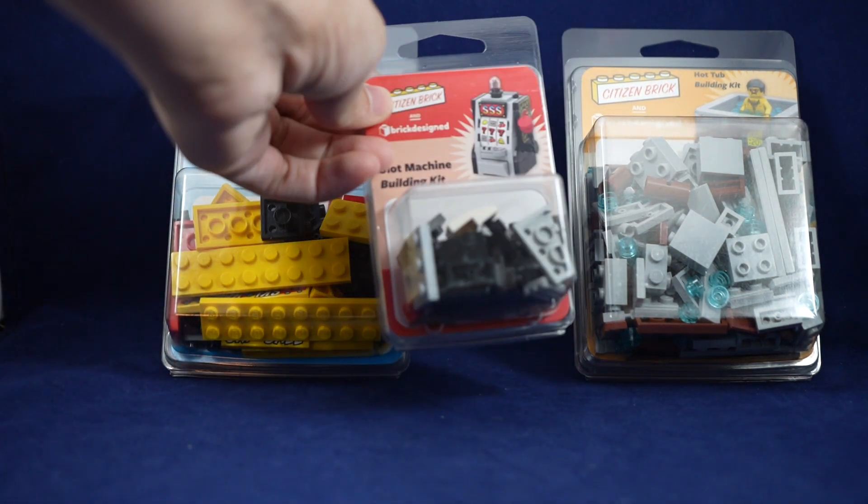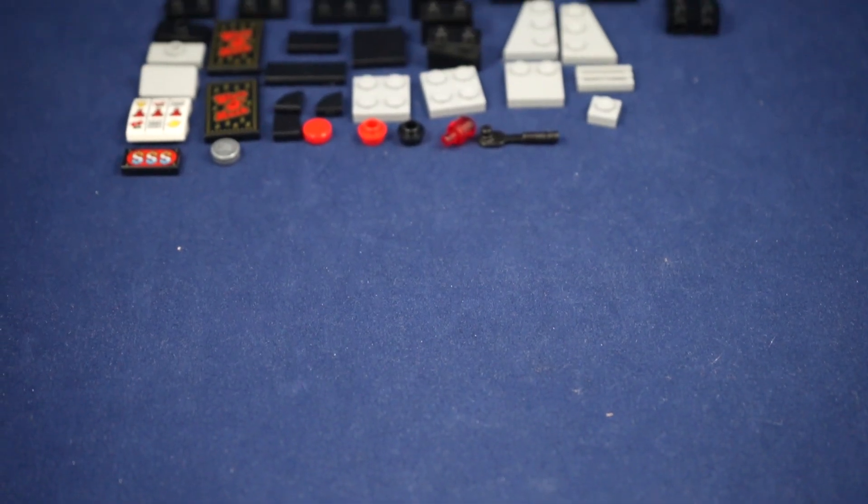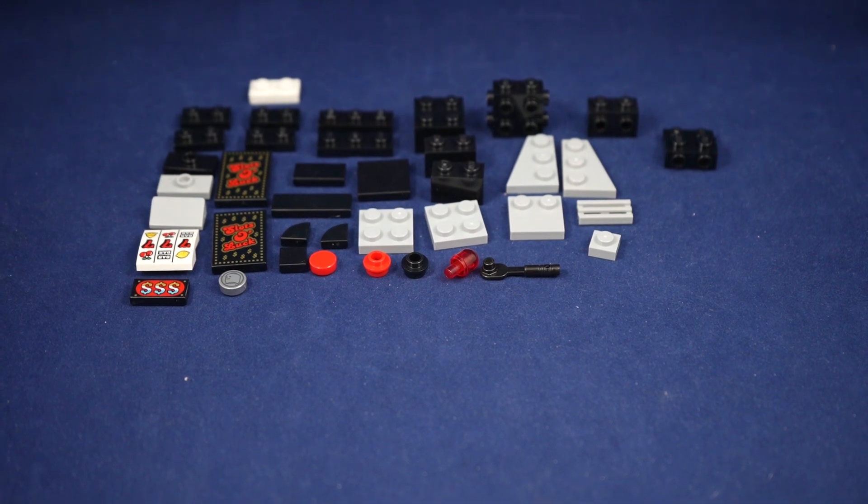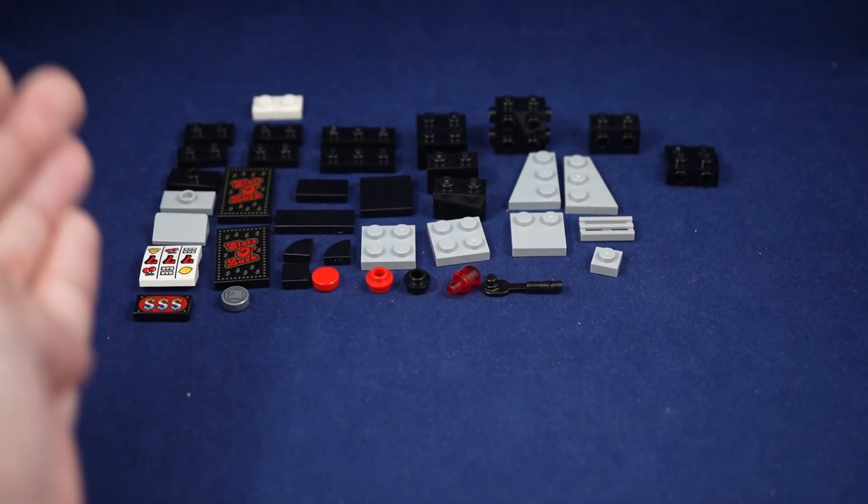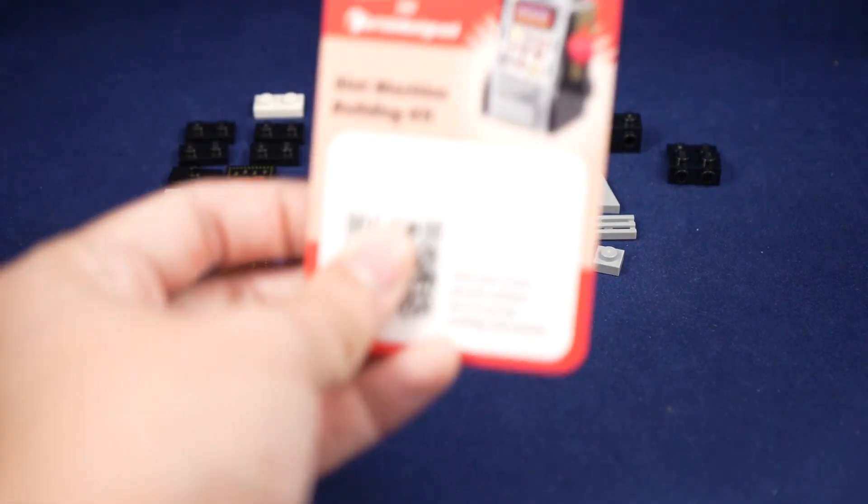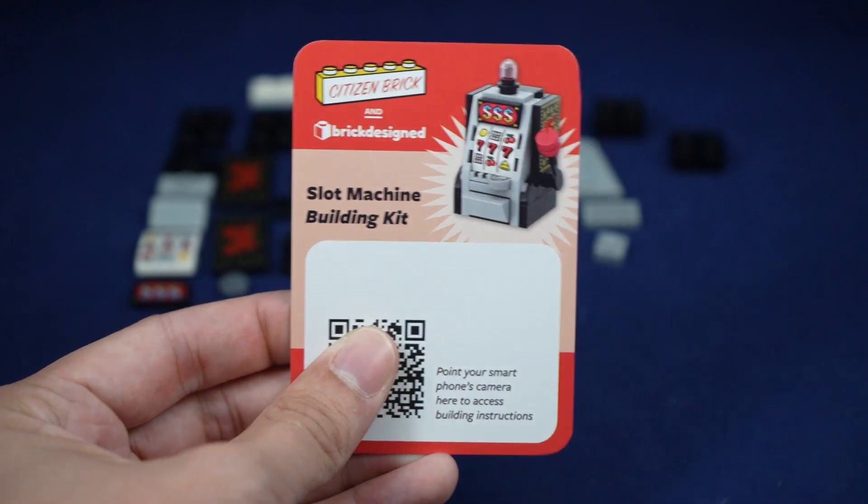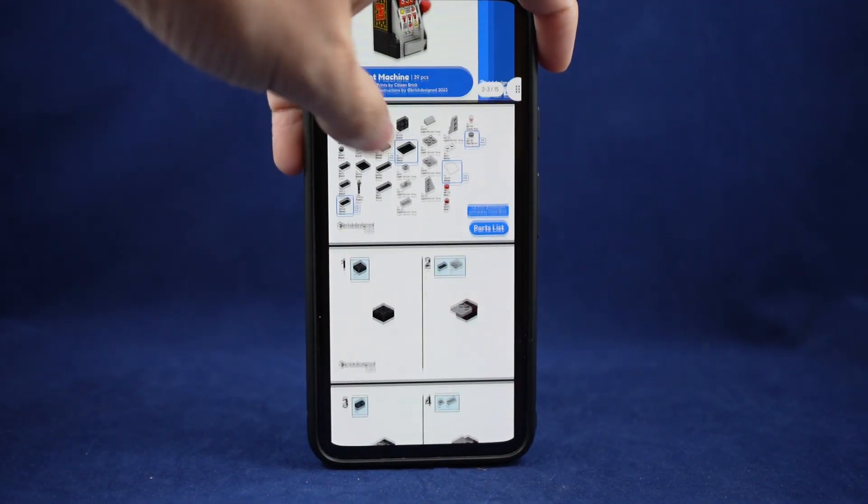So to start off let's just go with the smallest one being the slot machine. Getting the slot machine out of the packaging you can see that it has 40-ish pieces with five of them being custom printed here and two of those are duplicates. Like a lot of their more recent custom sets, they have a QR code that gives you the instructions, a little print of the design of the set.